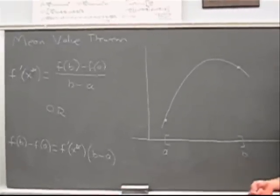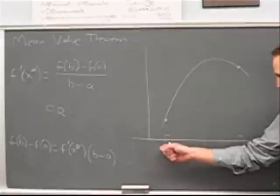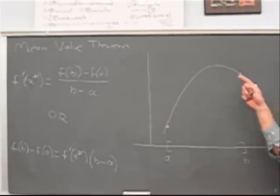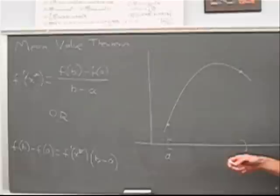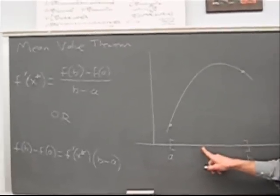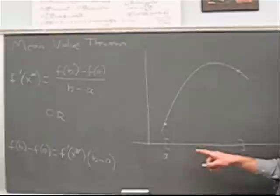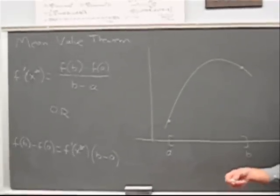Loosely speaking, the mean value theorem says that if a function is continuous on a closed interval, which means defined at the endpoints, and differentiable on the open interval, then there's going to be at least one value of x. There's going to be at least one time where the instantaneous rate of change is equal to the average rate of change of the function over that interval.